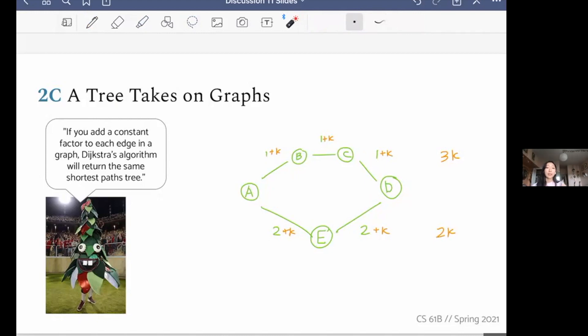And so we've disproved your Stanford friend. We constructed this simple graph that shows adding a constant factor to each edge in the graph will alter some of your shortest paths. Because adding a constant factor to each edge in a graph disadvantages paths with more edges because you're adding that constant factor more times to that total path length. And that is all of two. So thank you very much.